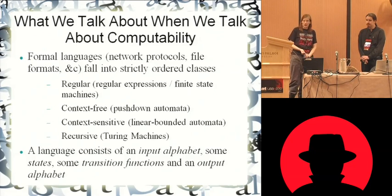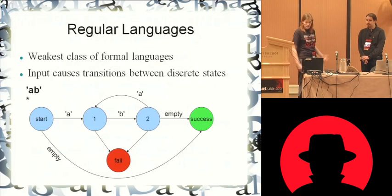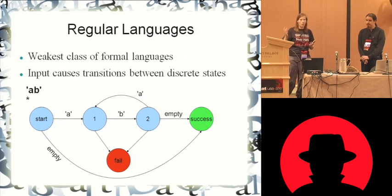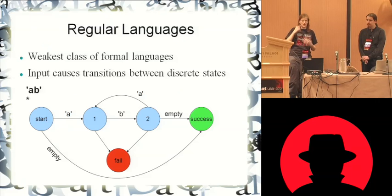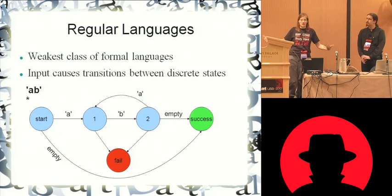So for any language, you'll have an input alphabet, some set of states, some set of transition functions, and an output alphabet — this is what formally defines a language. What do we mean by regular languages? These are the weakest class. At the core, you're parsing input one token at a time, and those inputs cause transitions between discrete states. So if you have the regular expression AB*, that's AB, AB, AB — any number of repetitions of that.